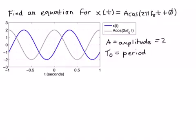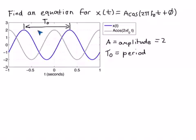Now we have to find what the period of the sine wave is. The period is the time that it takes to go through one cycle — say, to go from its maximum value to another maximum value. That's T₀. Reading off this plot, we can pretty easily see that the period is one second. Each grid is half a second, and going a little bit on each side makes a full one second. So the period is one second.